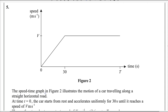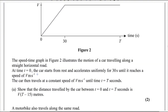The speed-time graph in figure 2 illustrates the motion of a car traveling along a straight horizontal road. At time t equals 0, the car starts from rest and accelerates uniformly for 30 seconds until it reaches a speed of v meters per second. The car then travels at constant speed of v meters per second until time t equals T seconds. Show that the distance traveled by the car between t equals 0 and t equals T seconds is v(t minus 15) meters.